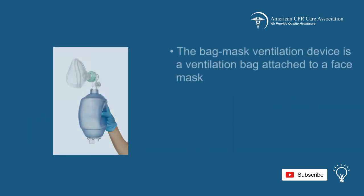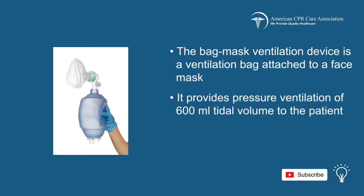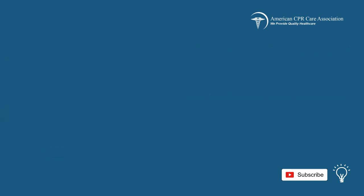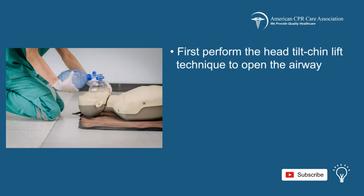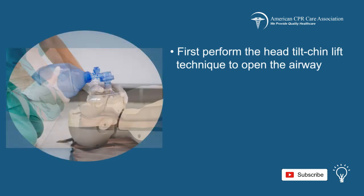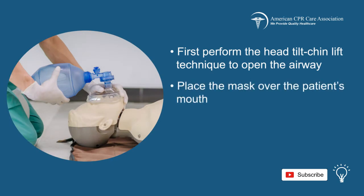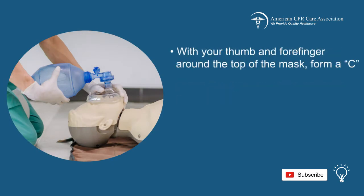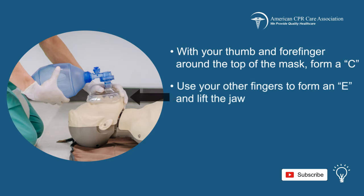For ventilation, the bag mask ventilation device — a ventilation bag attached to a face mask — can be used. It provides positive pressure ventilation of 600 milliliters tidal volume to the patient. When you practice this method, first perform the head tilt chin lift to open the airway, and as you do so, place the mask over the patient's mouth. With your thumb and forefinger around the top of the mask, form a C.